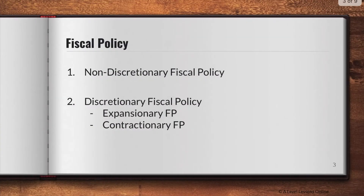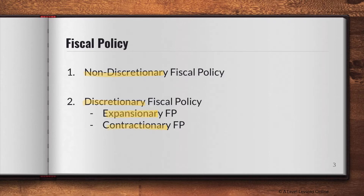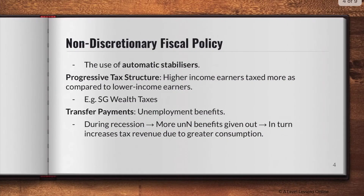Fiscal policy can be broken down into two types: non-discretionary, meaning it is not directly handled or decided by us, and discretionary fiscal policy. Discretionary is further broken down into expansionary and contractionary fiscal policy. Expansionary helps to expand the economy, which is a good thing. Contractionary aims to contract the economy, which can also be beneficial depending on the current economic situation.